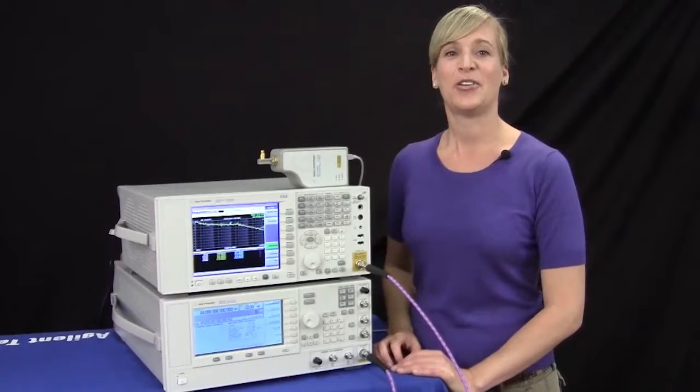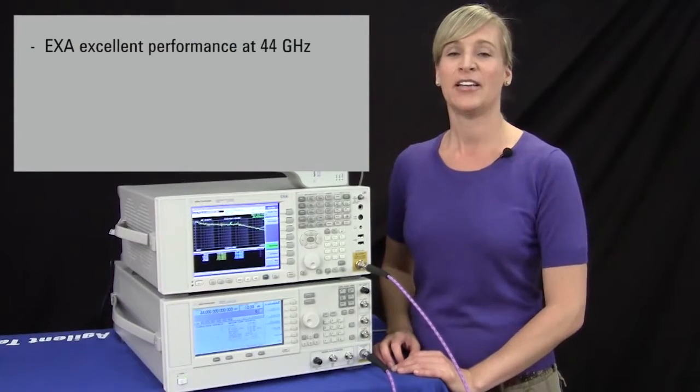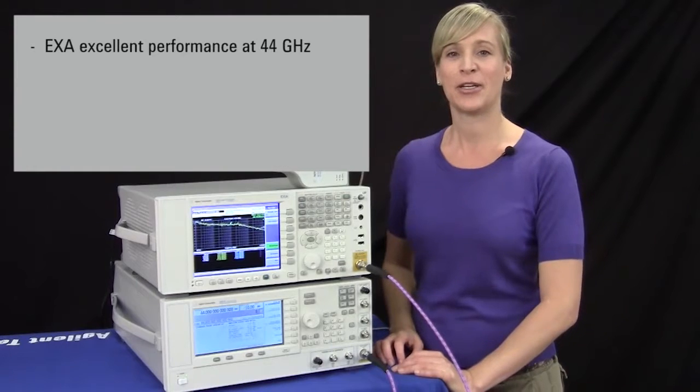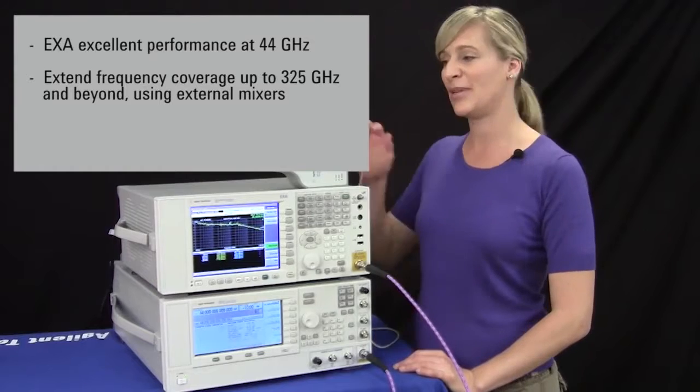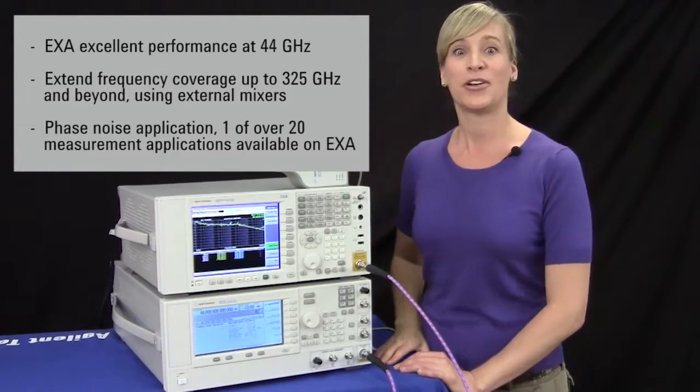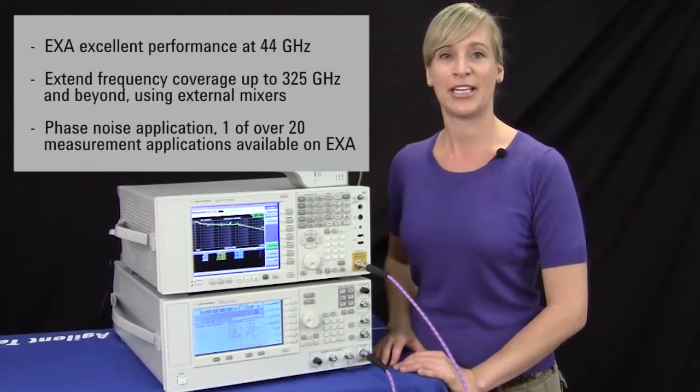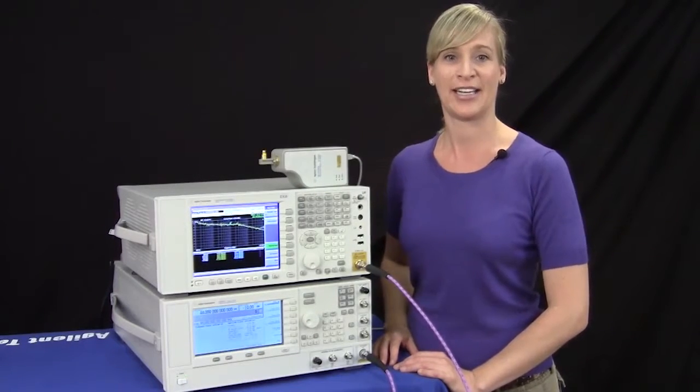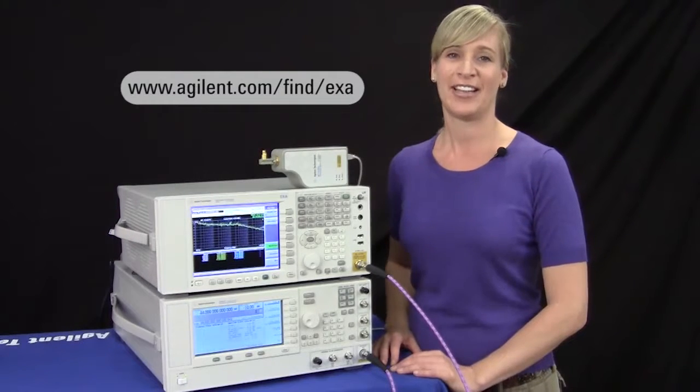I've just shown you the new EXA's excellent performance at 44 gigahertz and also how we can extend our frequency coverage up to 325 gigahertz and beyond by using our external mixers and our external mixing option. I've also shown you our phase noise application which is one of over 20 measurement applications available on the new EXA. For further information please see the URL shown and thanks for watching.